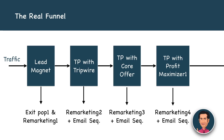Once the person is convinced about the tripwire and gives you one dollar or 99 rupees, you have their trust because they've done a monetary transaction with you. The very next step is to go with the core offer — present your core offer right after the person takes the tripwire. The person may take it or may exit. If they take it, great — we move to the next step. If they exit, no worries — we'll do remarketing again.